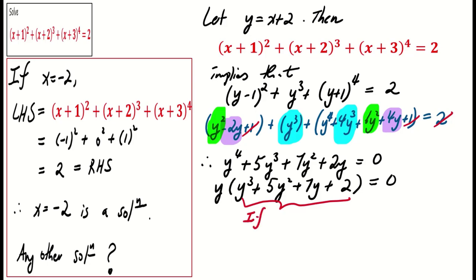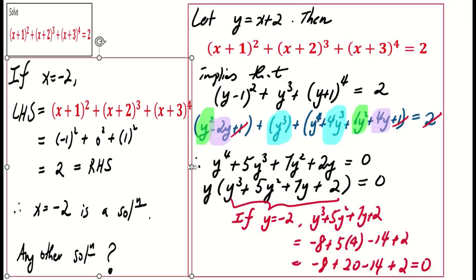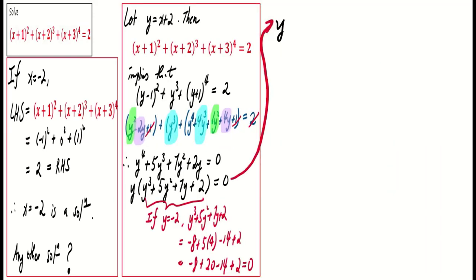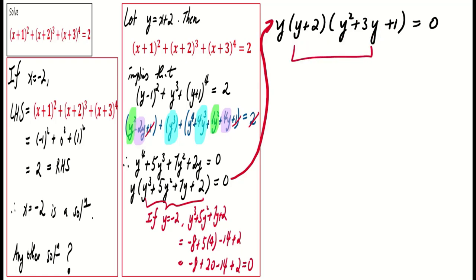From the second factor, we observe that if y equals negative 2, then the expression y³ + 5y² + 7y + 2 equals 0. This indicates that y equals negative 2 is a solution, and hence (y+2) is a factor. The expression factors as y(y+2)(y² + 3y + 1). Checking the term in y² during expansion, we get 3y² + 2y², which is 5y². That's correct.